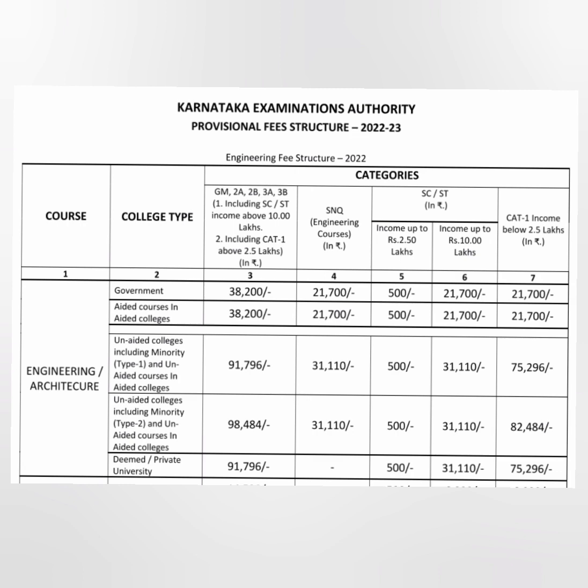The last institute category is deemed or private universities, such as Reva University or Presidency. For GM, 2A, 2B students, the applicable fee is 91,796. There is no SNQ quota in deemed universities. For SCST students, the fee is 500 if income is under 2.5 lakhs, and 31,000 if up to 10 lakhs. For Category 1 students, the fee is 75,000 even in the deemed university. So these are the five college types: government, aided, unaided type 1, unaided type 2, and deemed or private.